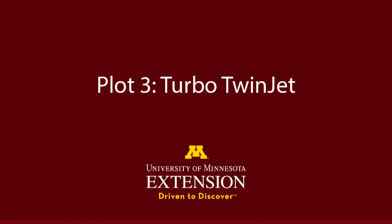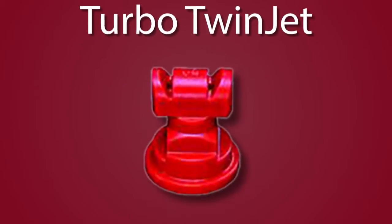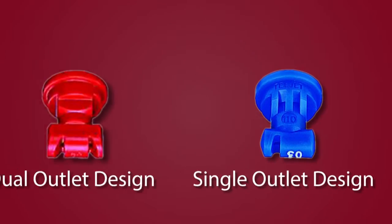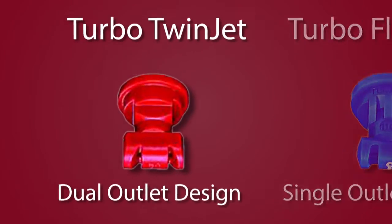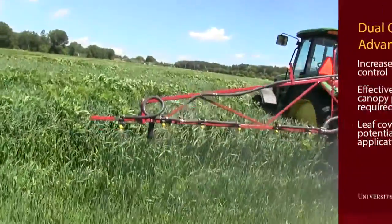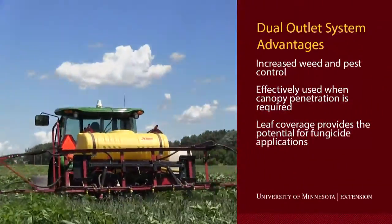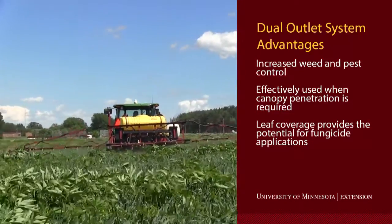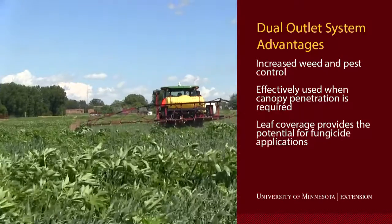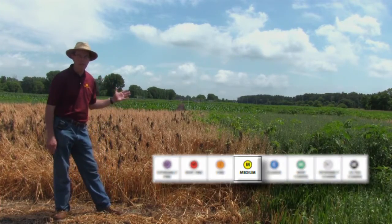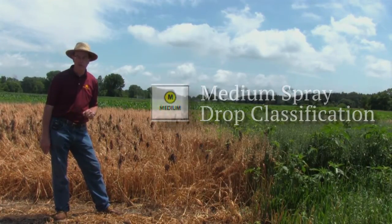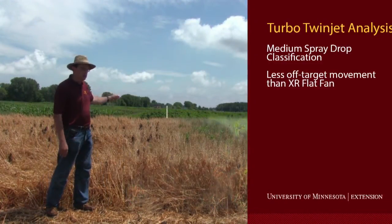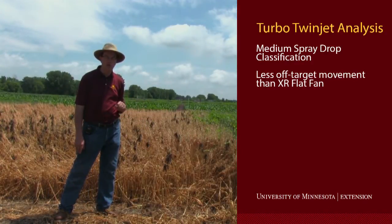The next nozzle we're going to be looking at is a style called a turbo twin jet. This nozzle style has a dual outlet — two openings as opposed to one. Previously we looked at a turbo flat fan with just one single outlet; this is the same style but with two openings. The idea behind two openings is to improve weed control and improve efficacy of pest control. There was also consideration of this style of nozzle with twin outlets for fungicide applications in soybeans, such as for the potential of soybean rust in the southern United States. We would also classify this as a medium-sized droplet, although at higher pressures it can become small rapidly. In this situation, we have some off-target movement but less than we had in the earlier plot with the XR flat fan or fine droplet.